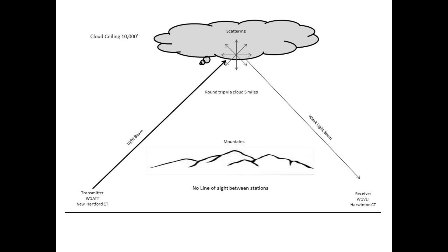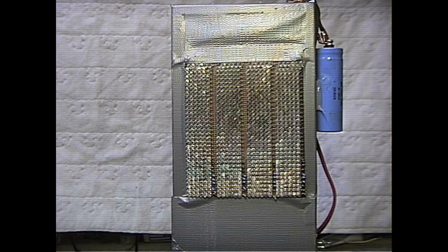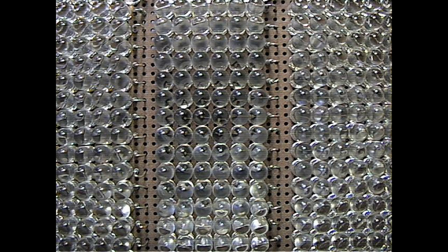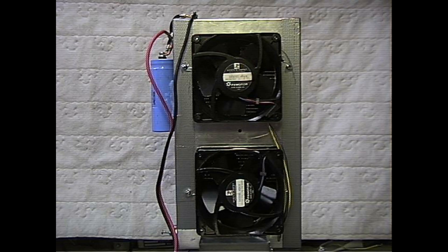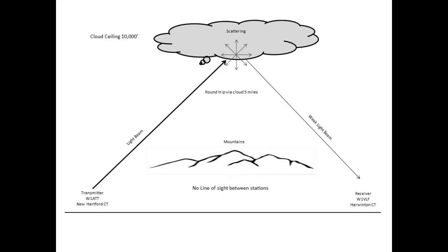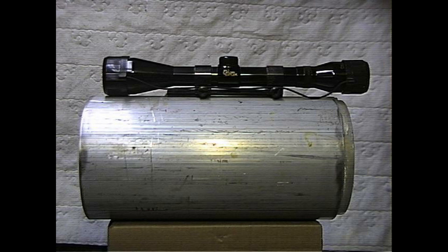Just a couple of quick parameters: the transmitter that I made was 816 LEDs removed from remote controls when I worked in the cable television industry, all in parallel-series-parallel complement. The cloud height that evening was 10,000 feet and the distance between the two sites was approximately five miles round trip from the ground to the cloud and back. From land to land, from the points on the earth, it was only about three and a half miles, but those points were on opposite sides of a mountain.